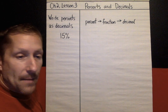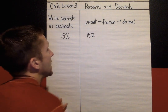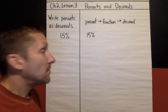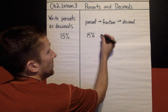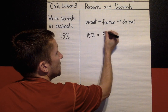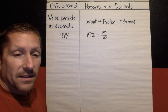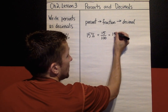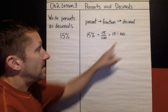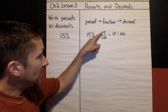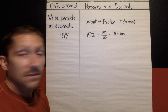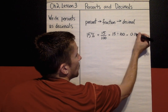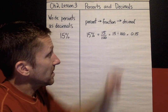Example number one: 15 percent. I'm going to connect these with equal signs because they are equivalent — same value. We learned in a previous lesson that percent means out of 100, so 15 percent as a fraction means 15 out of 100. We also learned that 15 over 100 is the same as 15 divided by 100. When you type that into your calculator, you're going to get 0.15. So 15 percent as a decimal is 0.15.